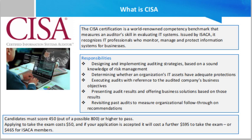Applying to take the exam costs $50, and if your application is accepted, it will cost a further $595 to take the exam, or $495 for ISACA members. The CISA exam is known for its difficulty, with an average pass rate of around 50 percent.